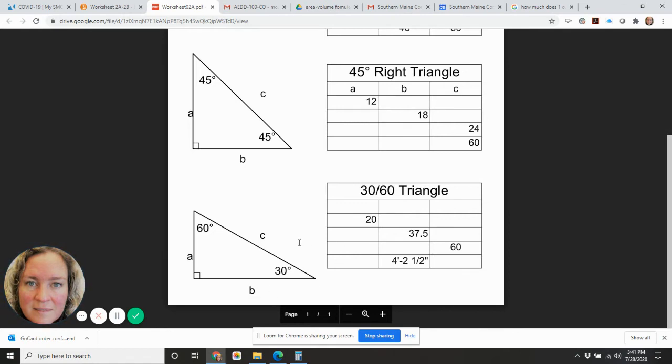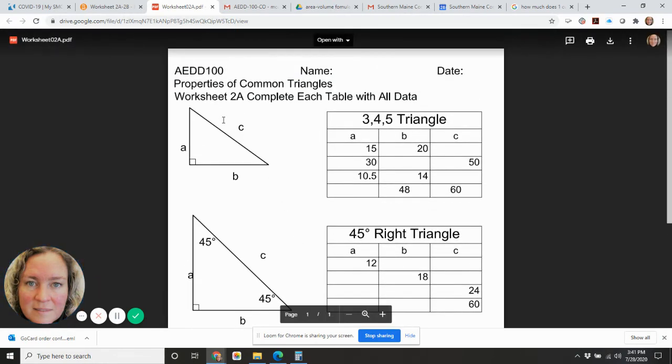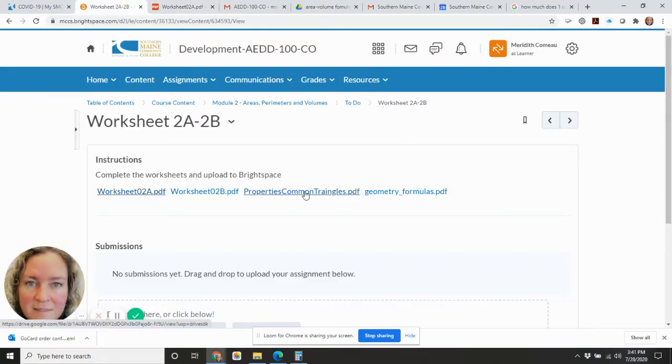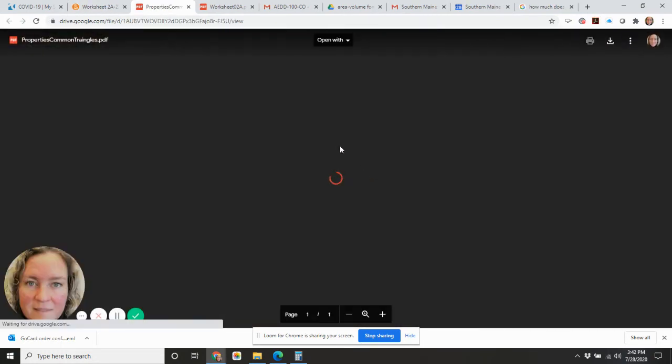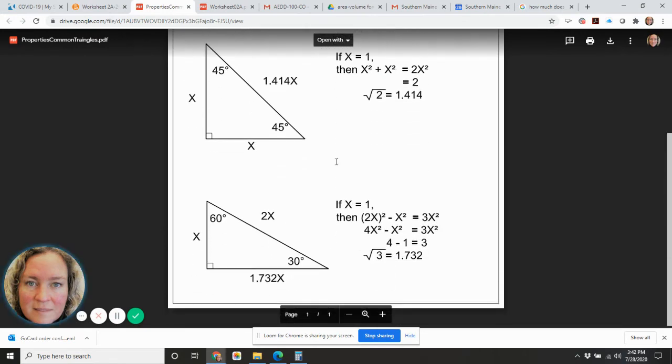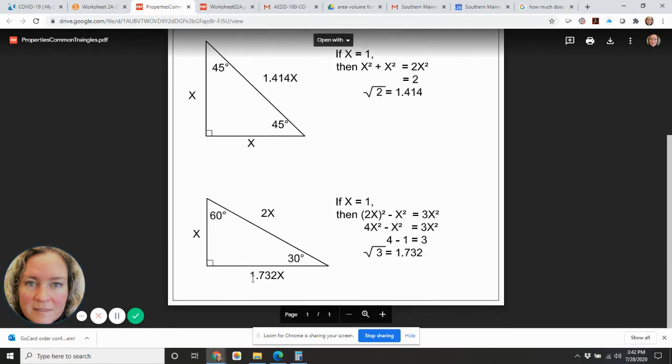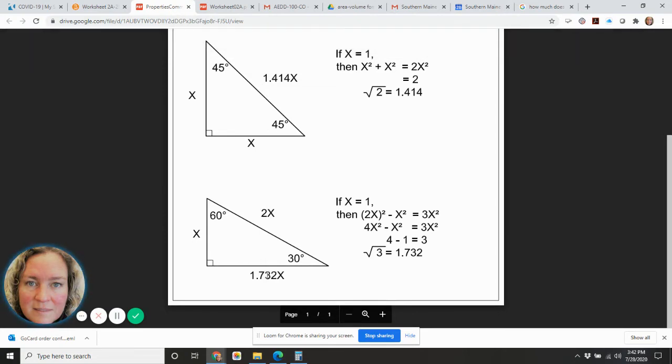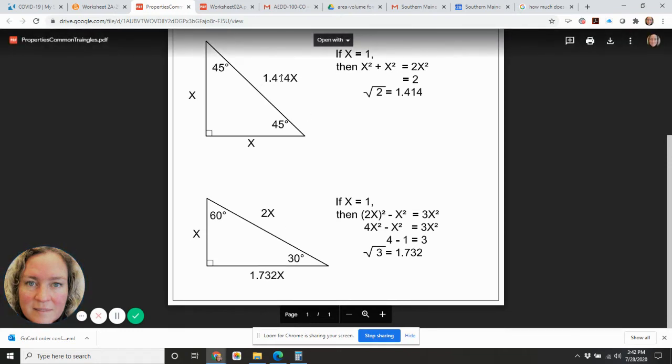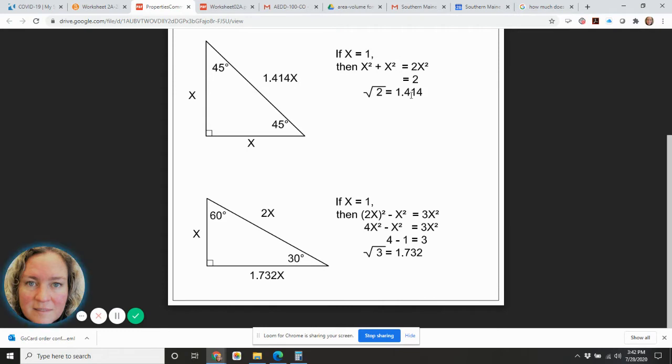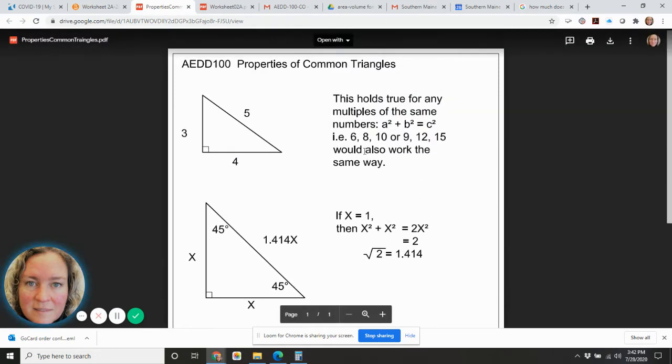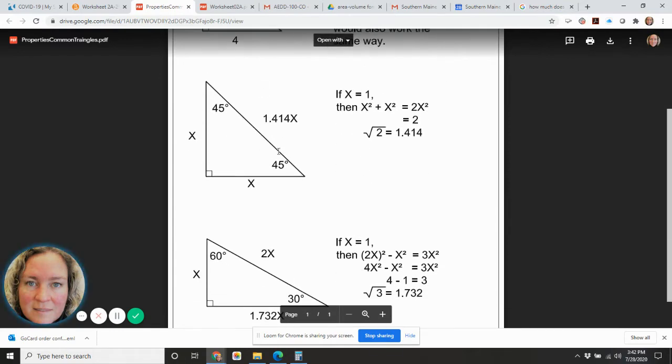A 30-60-90 triangle has a relationship such that a is always equal to half of c and then the b side of the triangle is a times the square root of 3. So in case you've forgotten, these references included in this set for this worksheet is the properties of common triangles which has the references for you again. Remember that this 1.732 is what you get if you typed in the square root of 3 in your calculator and the 1.414 is what you get when you type in the square root of 2 in your calculator.